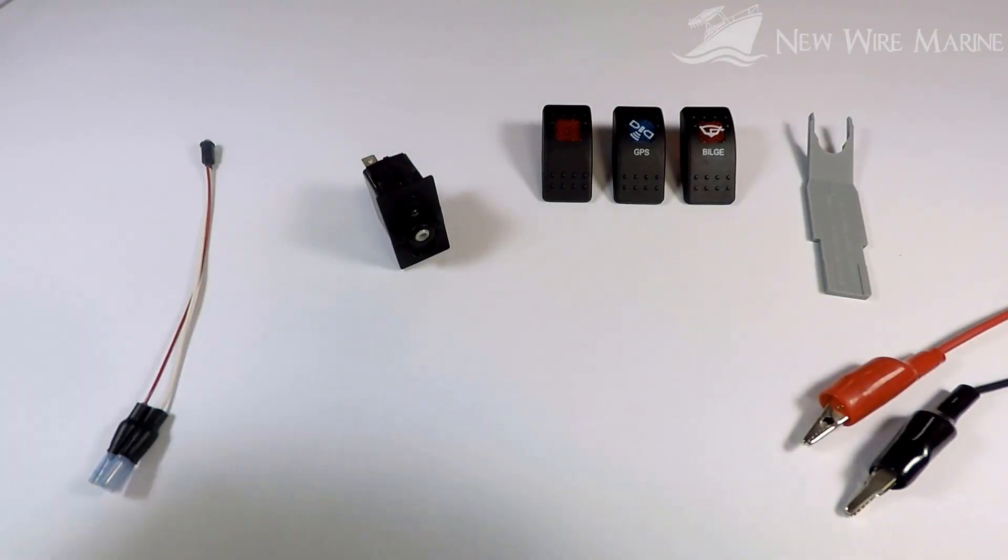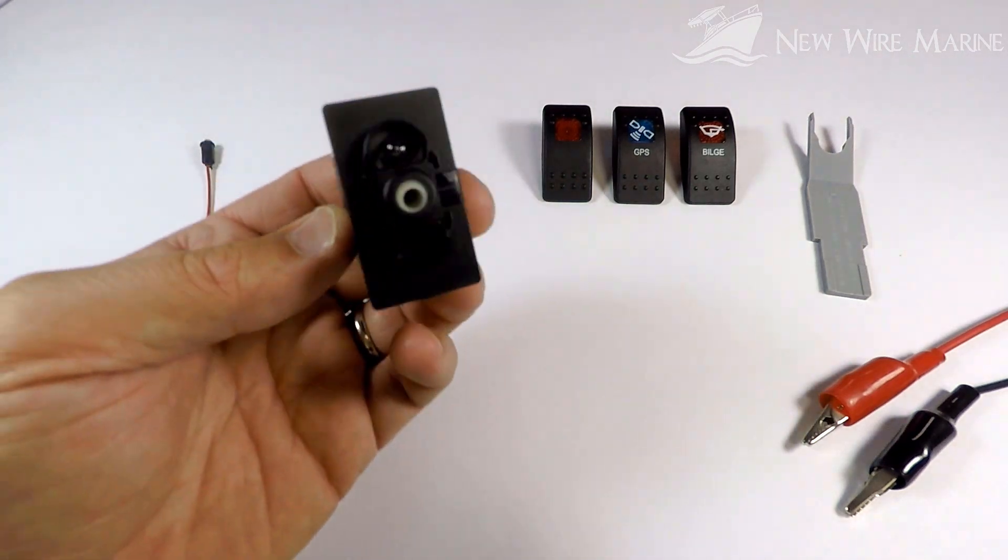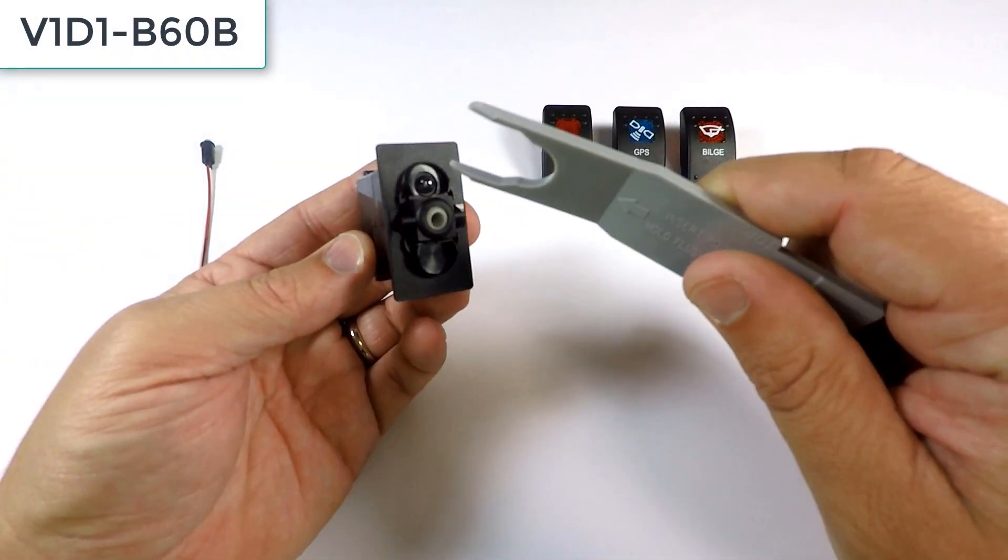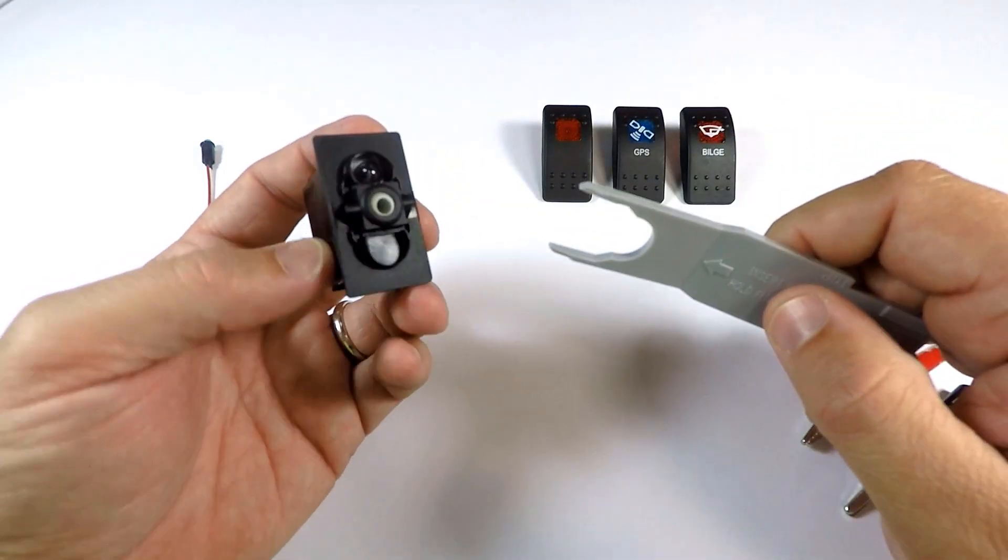Hi, my name is Eric with New Wire Marine, and today we're going to be talking about the V1D1B60B rocker switch. It's a single pole, single throw, with one dependent light at the top.